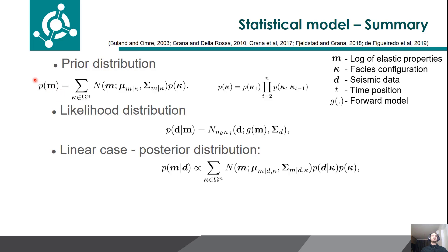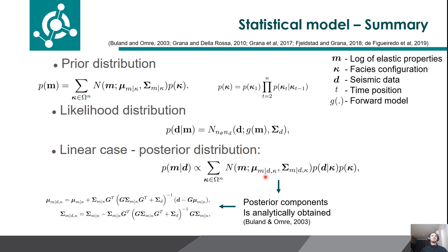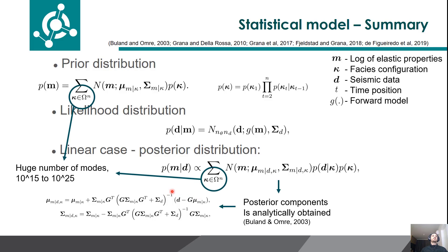Here we have the summary of the entire statistical model. The prior is as discussed, and the likelihood is assumed to be Gaussian — the same as the Bayesian linear inversion. The posterior distribution is a Gaussian mixture, and exactly as in the Bayesian linear inversion, we can compute the posterior components analytically. However, it's impossible to compute it entirely because the number of modes is huge — for example, a seismic trace with 50 samples and 3 facies yields 10 to the power of 25 modes. So we need to use smart algorithms to draw samples from it, such as the Markov chain Monte Carlo method.